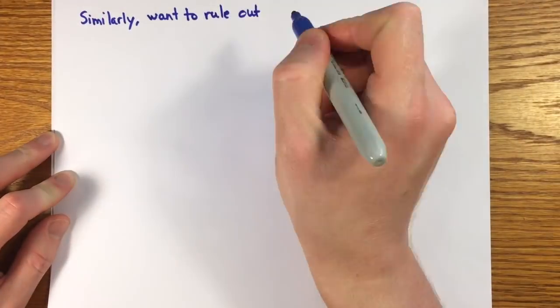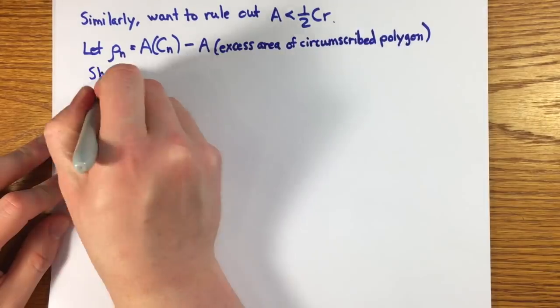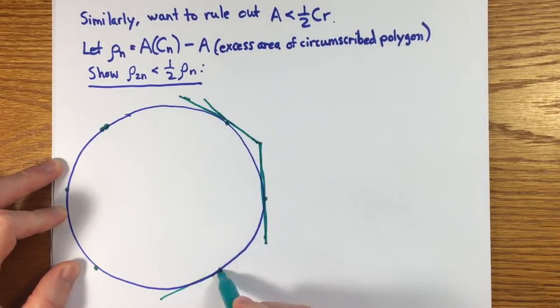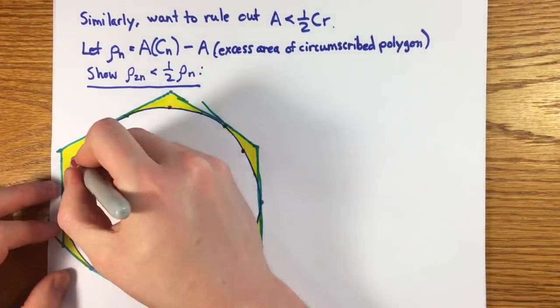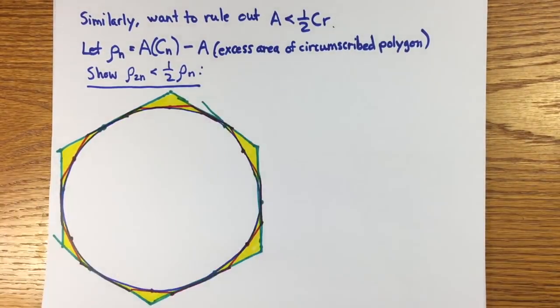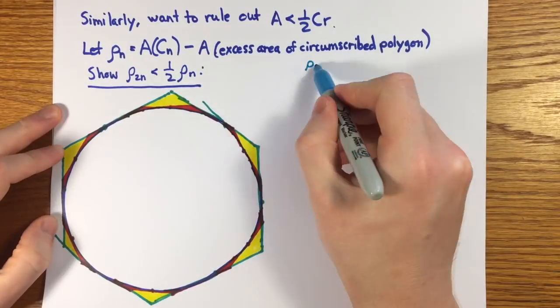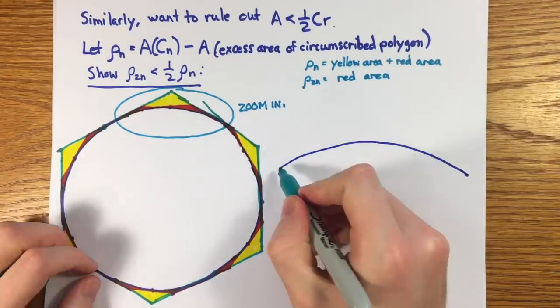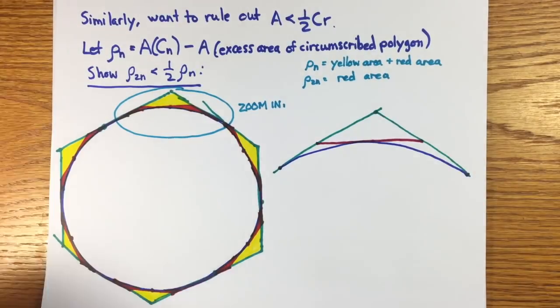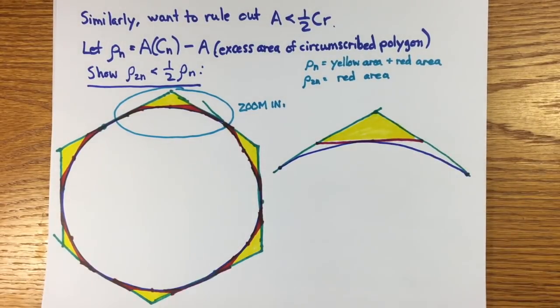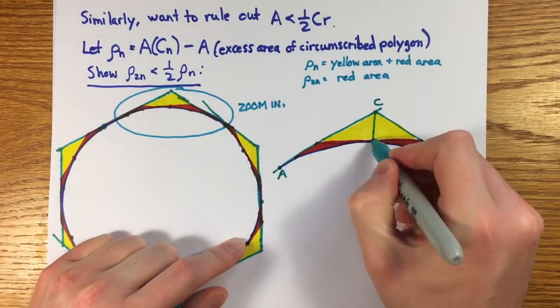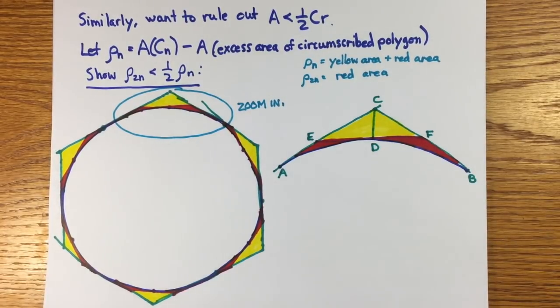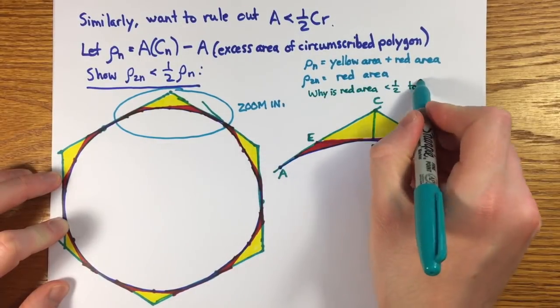The other way showing that doubling the sides of a circumscribed polygon cuts the excess area, rho n, by more than half is similar. Here's what it looks like to double the sides. Again, the excess areas are red for rho 2 n and yellow and red for rho n. Here's a zoomed-in picture of one of the excess regions. By symmetry, it's enough to show that the area of either of the red pieces, say the left one, is less than the area of the yellow triangle EDC above it.